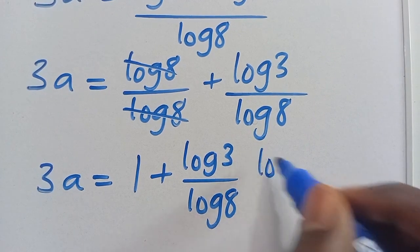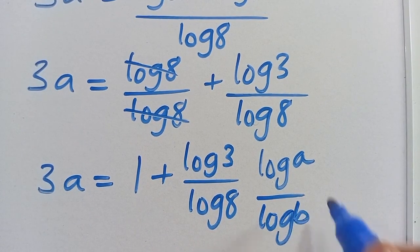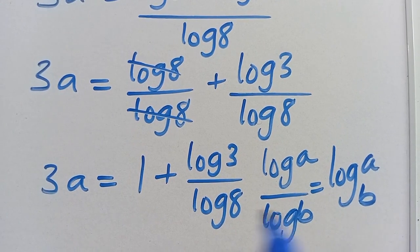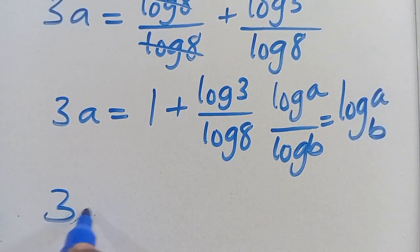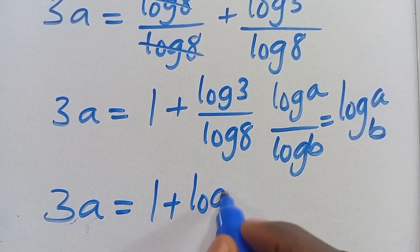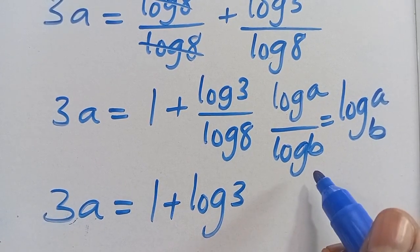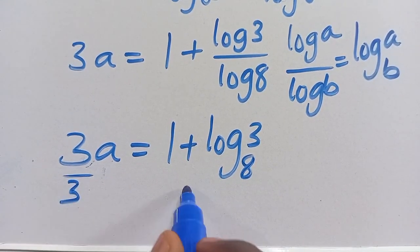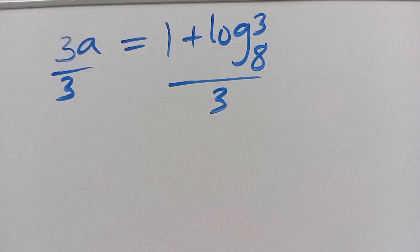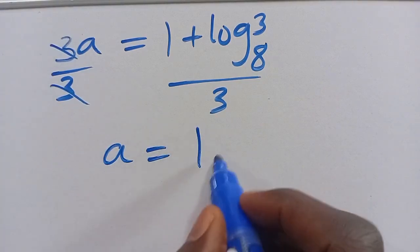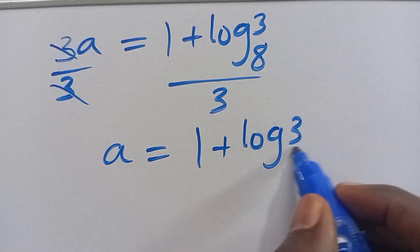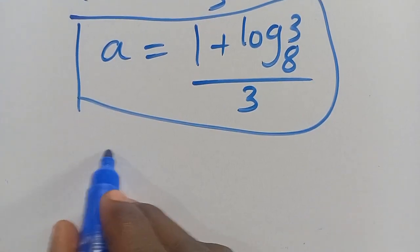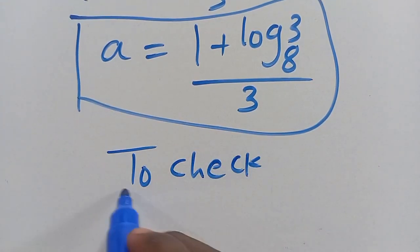So we have 3A equals 1 plus log 3 divided by log 8. Note that log A divided by log B equals log of A in base B. Applying this, log 3 divided by log 8 equals log base 8 of 3. So 3A equals 1 plus log base 8 of 3, and therefore A equals (1 plus log base 8 of 3) divided by 3.